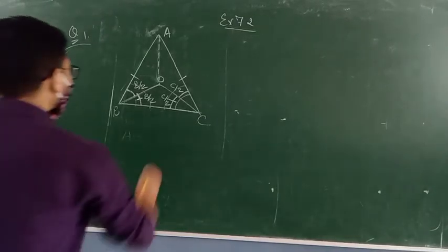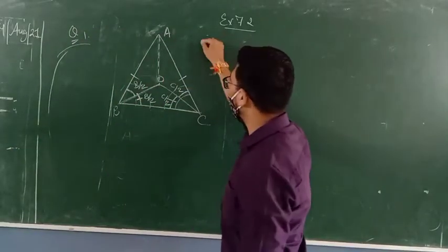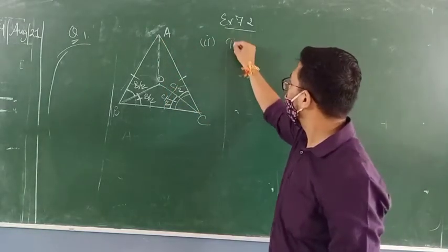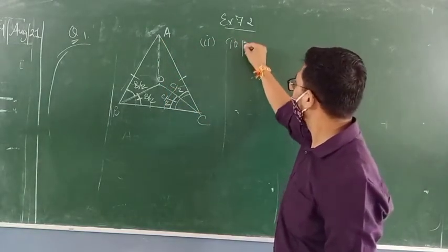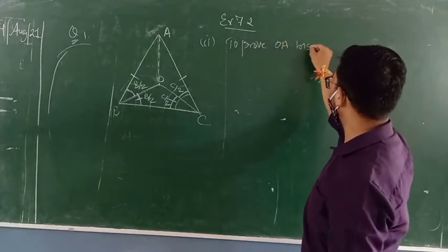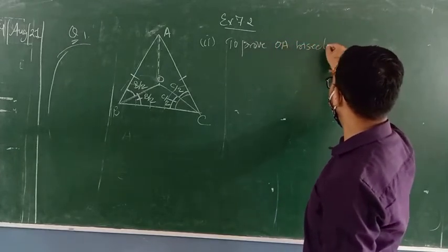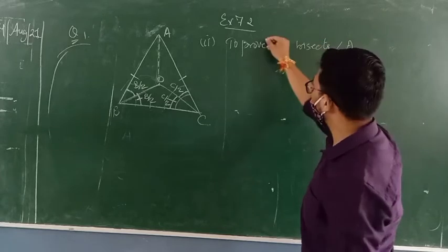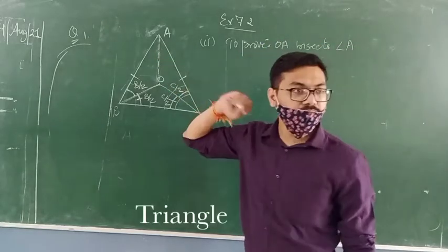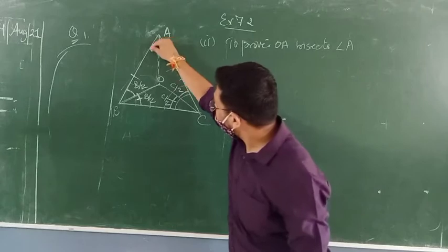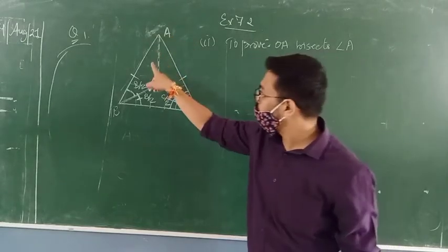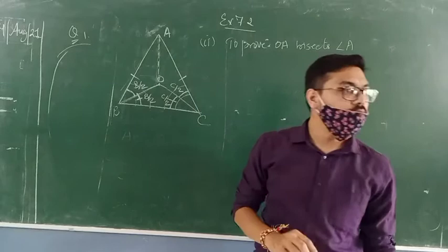Now the next part: in the second part you need to prove that OA bisects angle A. That means you need to prove that these two angles are equal. You can prove these two angles equal by CPCT. For that, you need to prove that these two triangles are congruent.